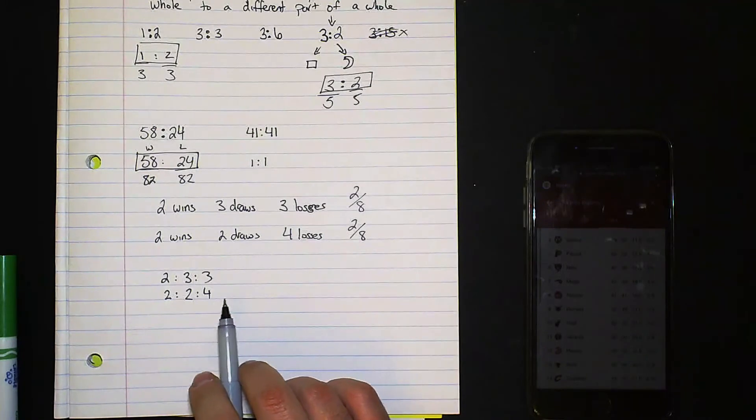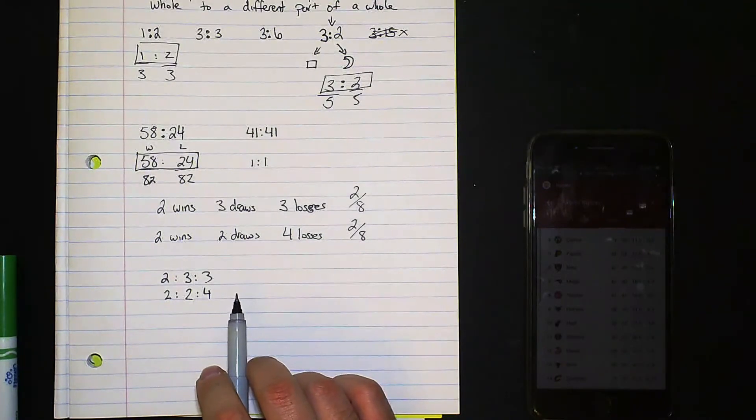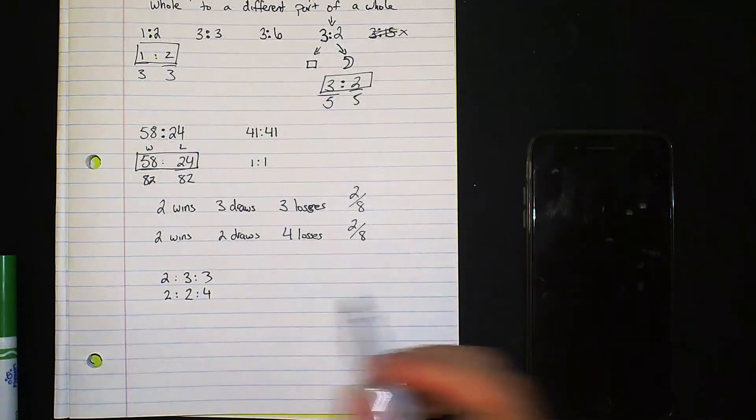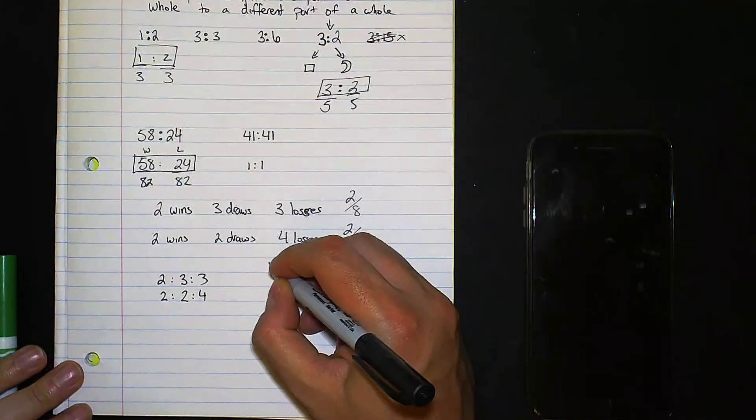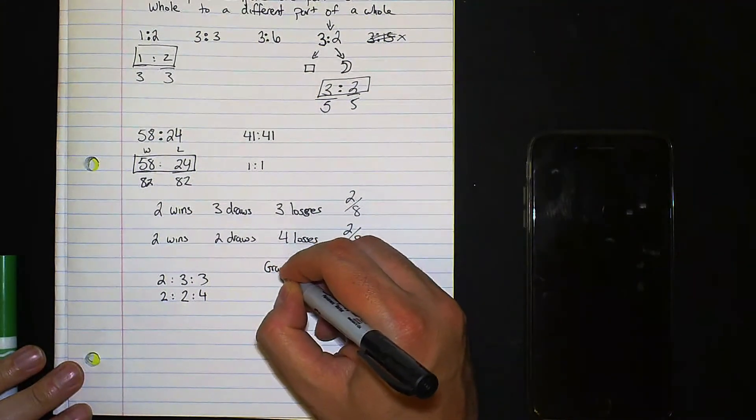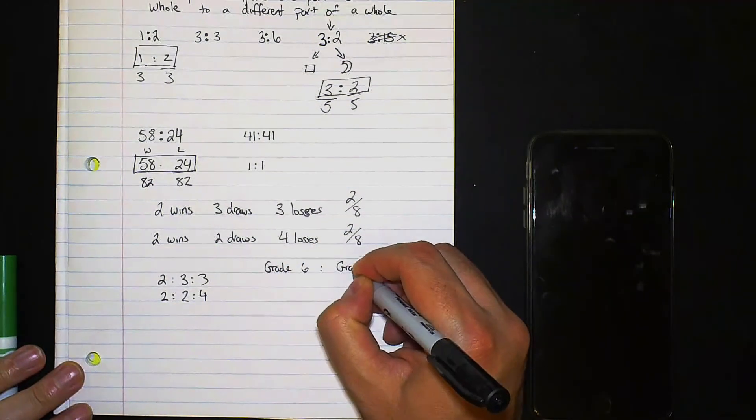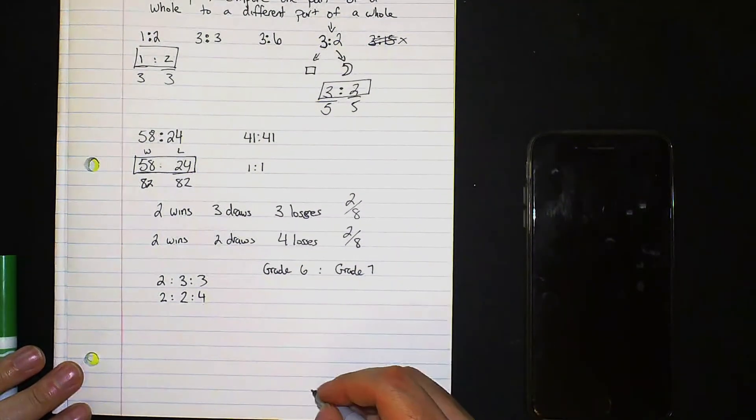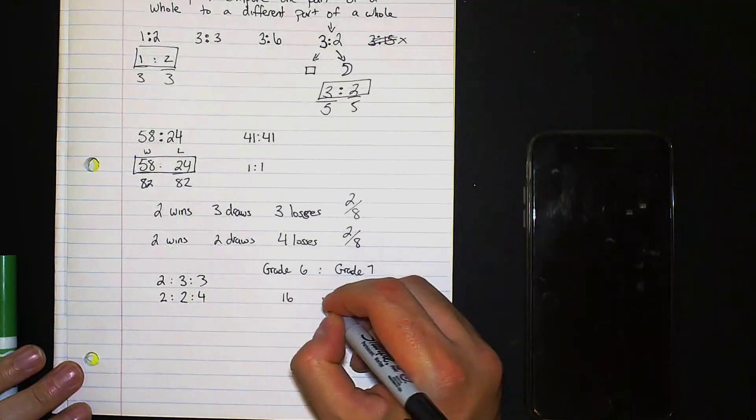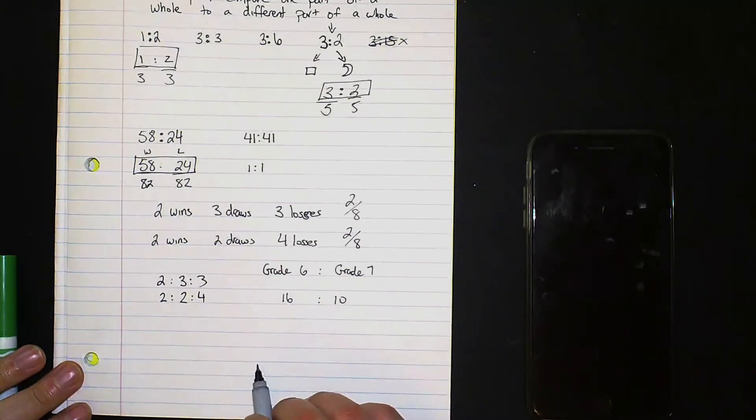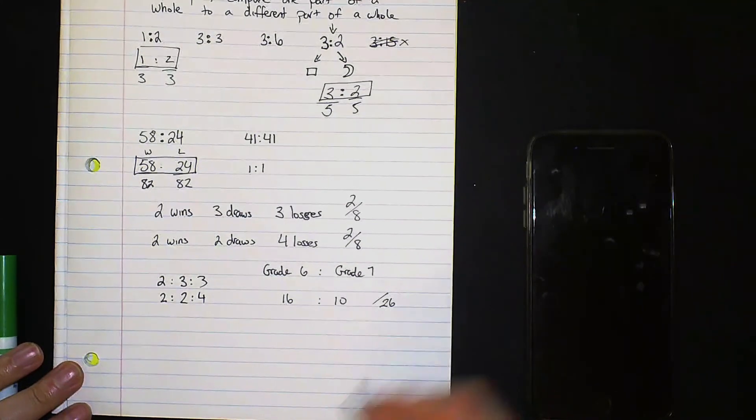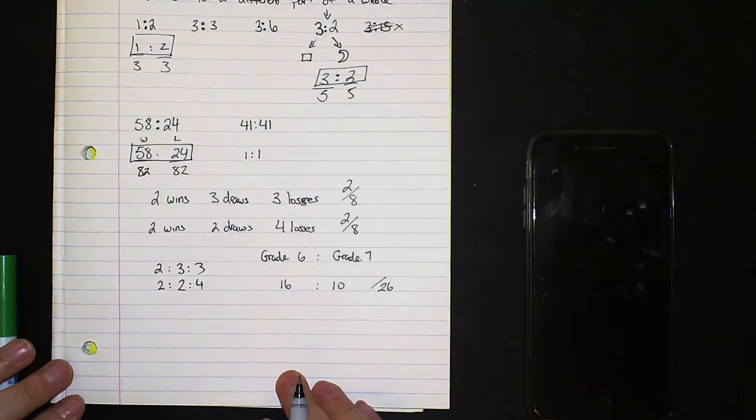Another example, one more example that I'm going to give you today is going to be well in our class for example the easy example because we have a split class. Grade 6 to grade 7, we have 16 grade 6's to 10 grade 7's. So we are able to determine through this ratio how many total students are in the class. We know that there are 26 total students in the class.